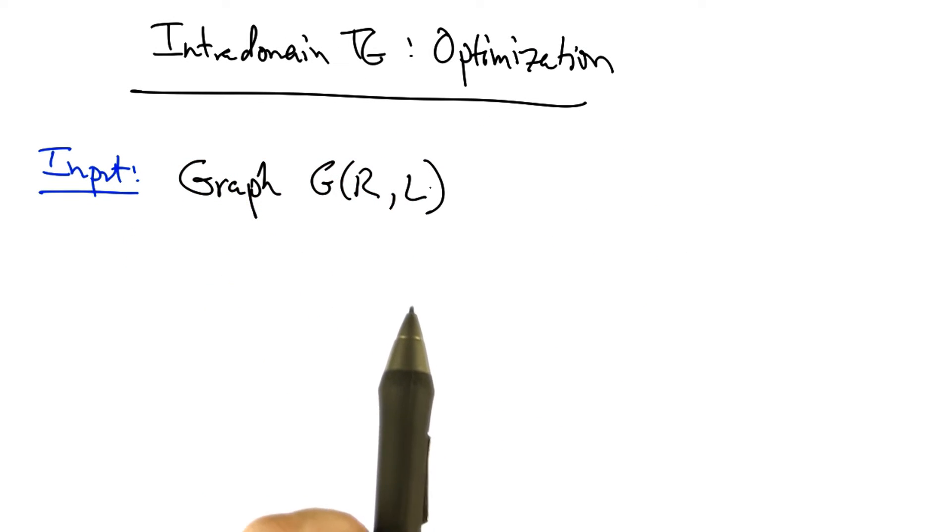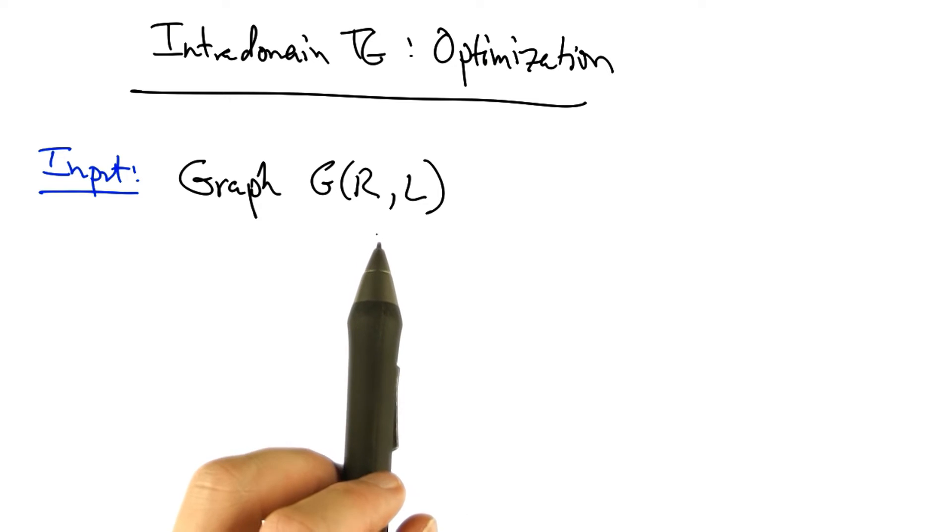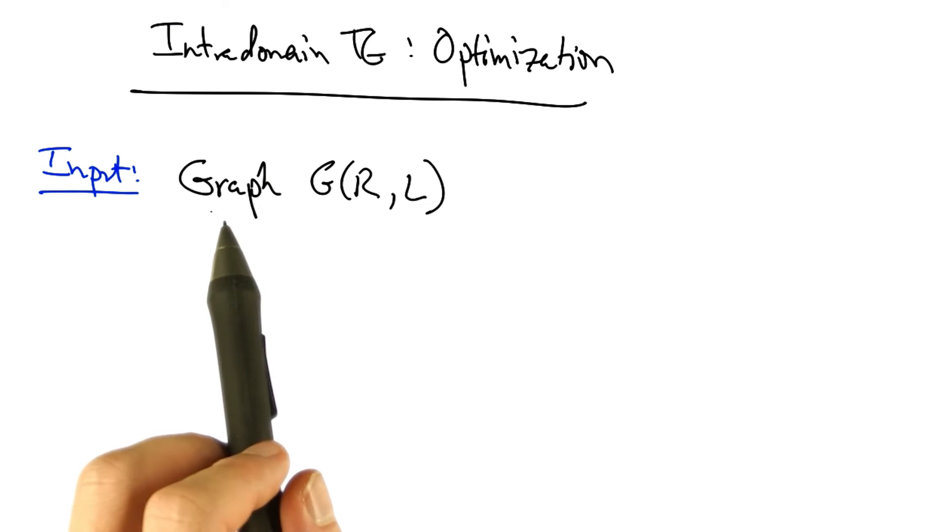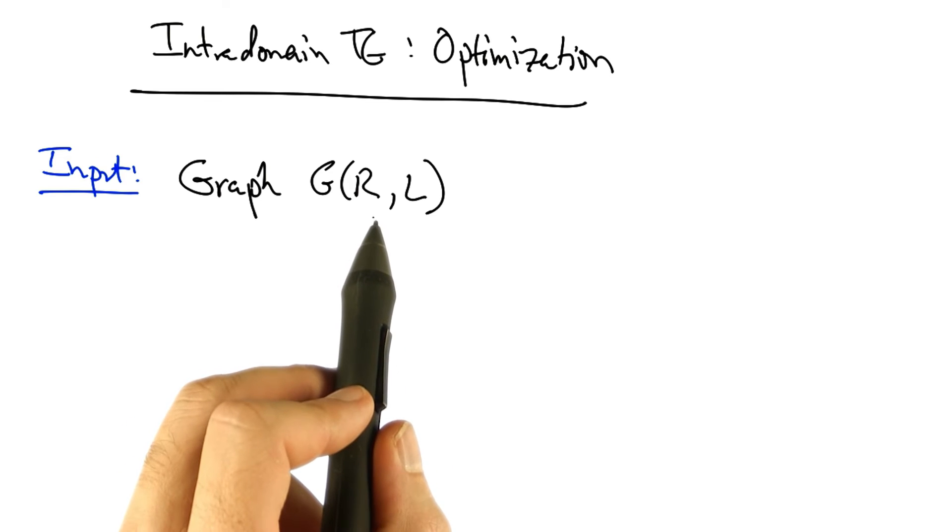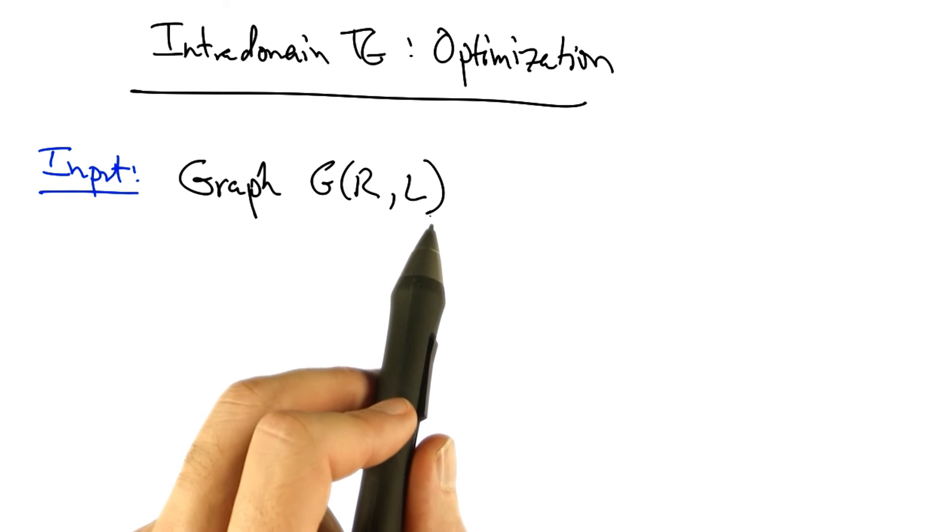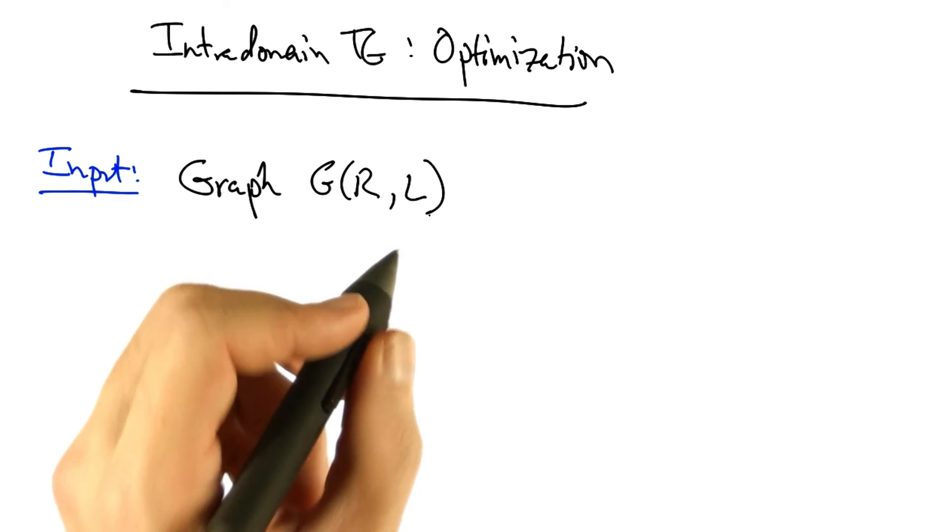Intradomain traffic engineering attempts to solve an optimization problem where the input is a graph G, where R is the set of routers and L is the set of unidirectional links.